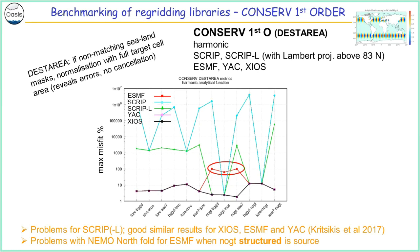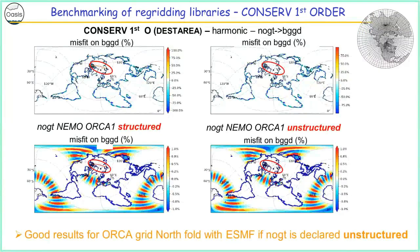We investigated that with ESMF developers. What we showed is that the problem is linked to the north pole folding — that's the error when this grid is declared as a structured grid in ESMF. But if you declare it as an unstructured grid in ESMF, that problem disappears. So the results are okay, but you have to declare the NEMO grid as an unstructured grid. We are still working with ESMF people so that it works when it's declared as structured.